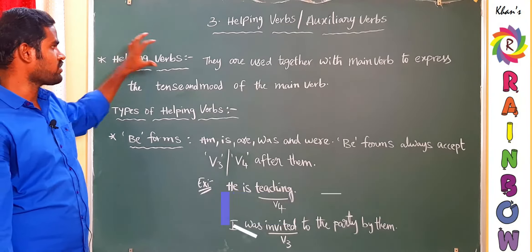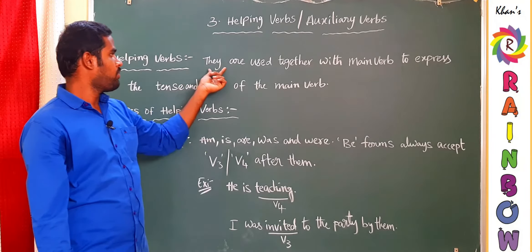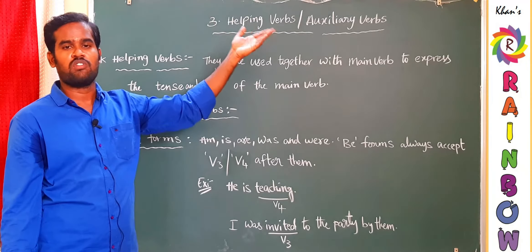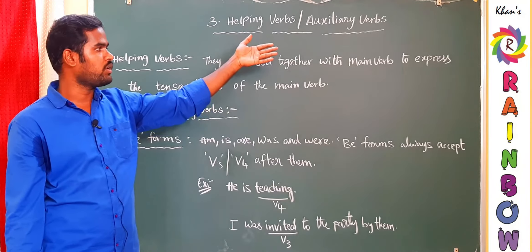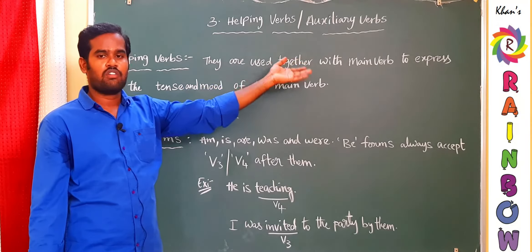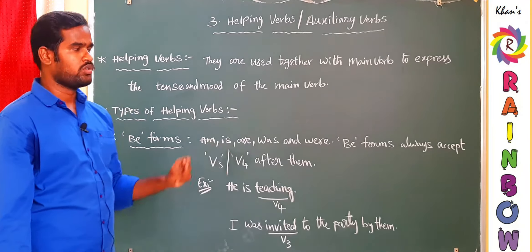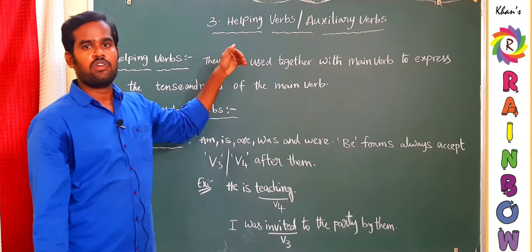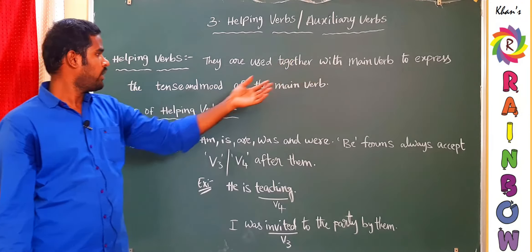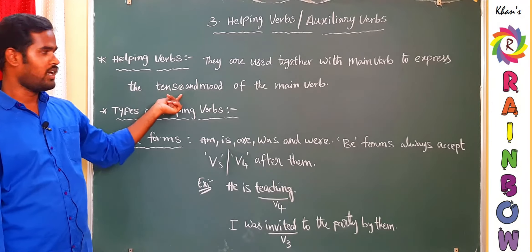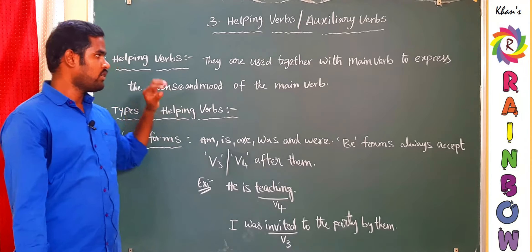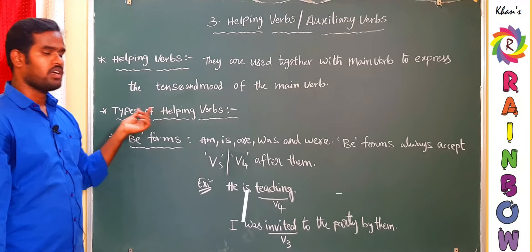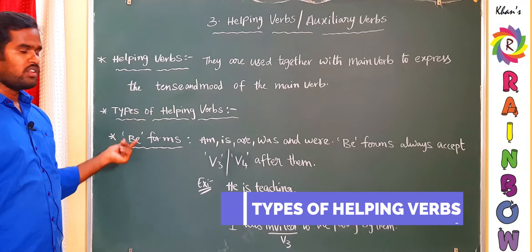First of all, what is the definition of helping verbs or auxiliary verbs? Helping verbs are used together with the main verb — the main verb being either V1 (present tense), V2 (past), V3 (past participle), or V4 (present progressive). Helping verbs assist main verbs to express the tense and mood of the main verb. There are many types of helping verbs.